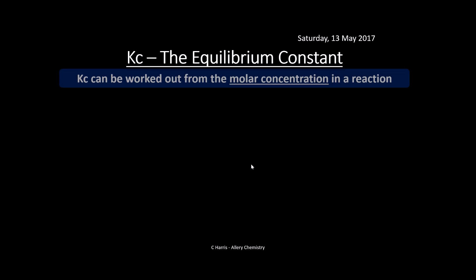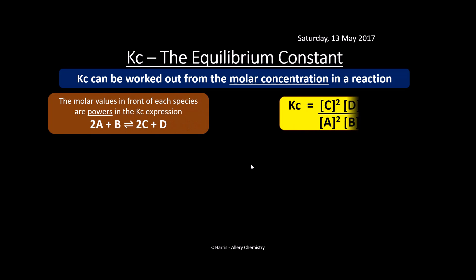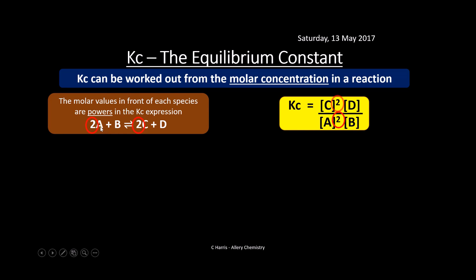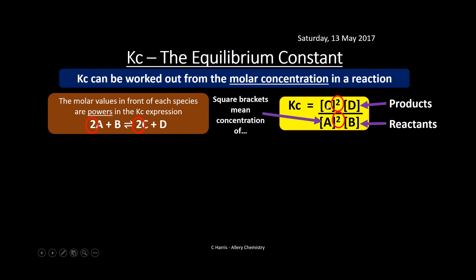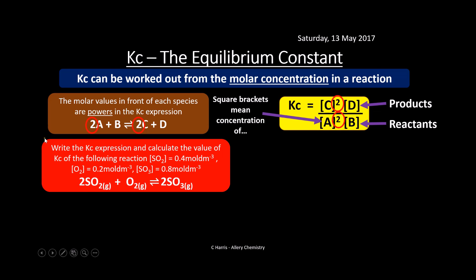Kc is an equilibrium constant worked out from molar concentrations in a reaction. For a generic equation with species A, B, C, D and their molar coefficients, the Kc expression is always products over reactants. The powers reflect the number of moles in front of each species, and square brackets represent concentration. So Kc = [C]²[D]² / [A]²[B]².